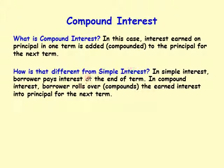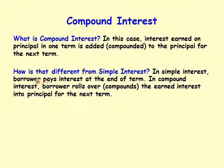How is that different from simple interest? In simple interest, a borrower pays the interest at the end of the term. In compound interest, the borrower rolls over the interest earned into the principal for the next term. The term here means the period of the interest rate — for example, two percent per month means the term is one month, and six percent per year means the term is one year.